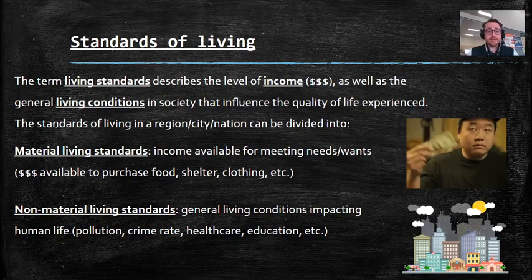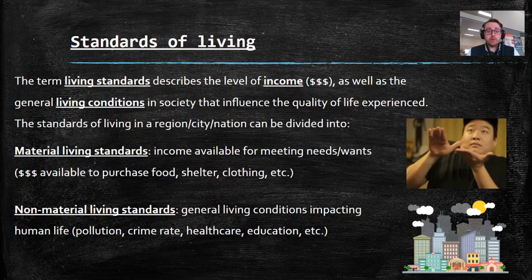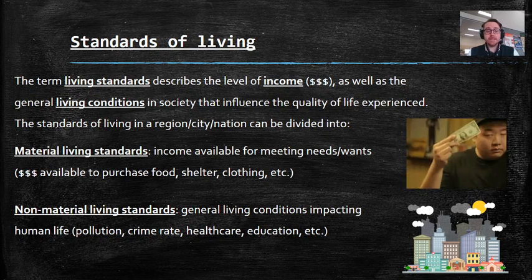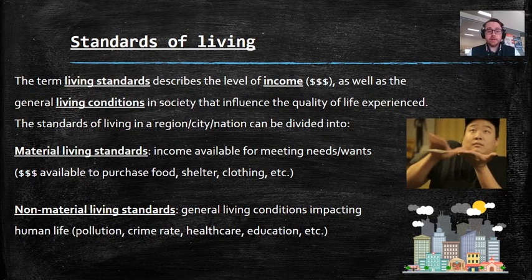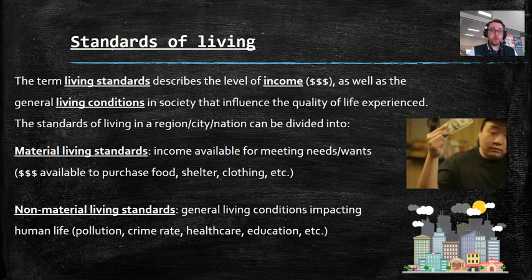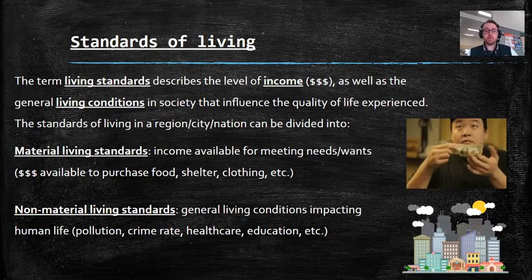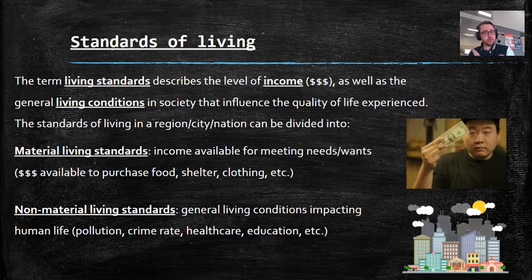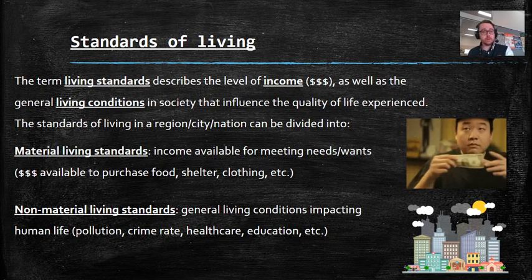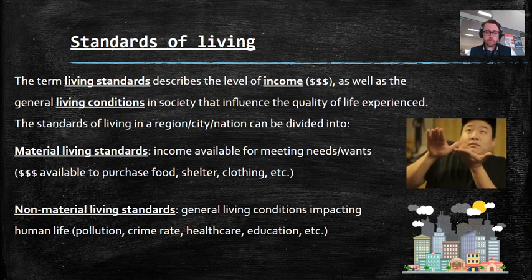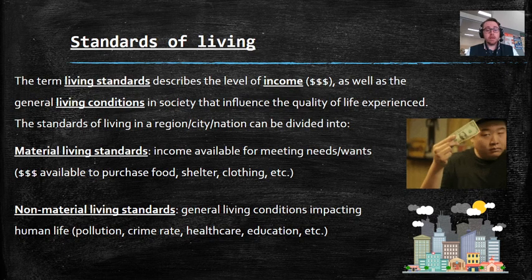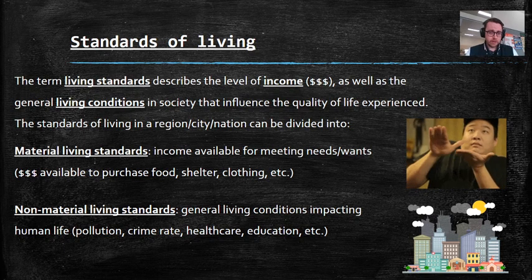The term 'living standards' describes your level of income — so how much money you have coming in — as well as the general living conditions in a society that influence the quality of life experience. Basically it's your income, your ability to buy goods and services that help you meet your needs and wants, and then it's the other stuff you don't really control — the environment, the city you live in, pollution, etc. The standards of living in a region, a city, or a nation can be divided into two categories.